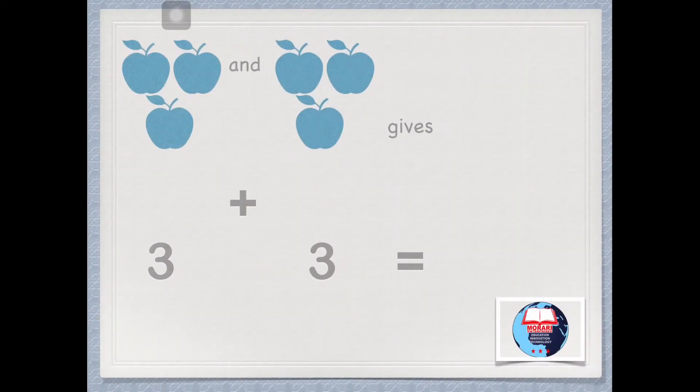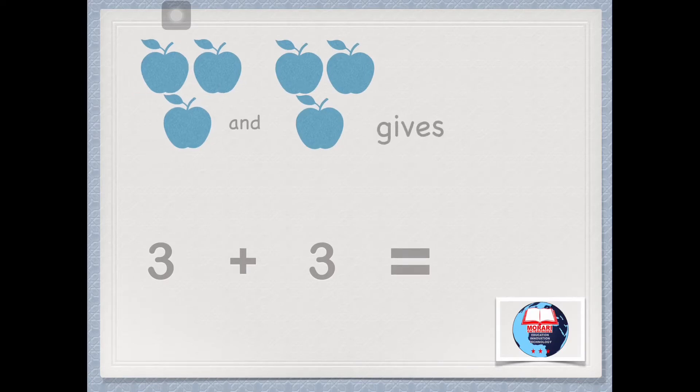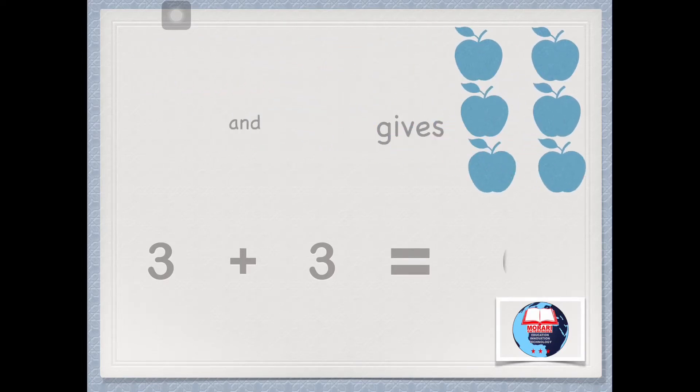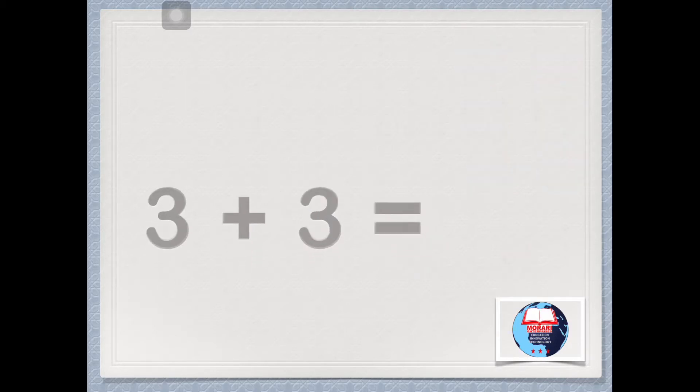3 and 3 gives 3, 4, 5, 6. 3 plus 3 equals 6.